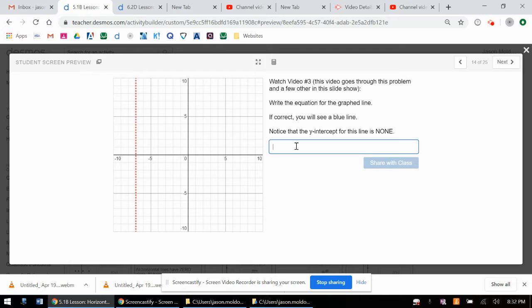And this one says we're going to write the equation for the graphed line. If correct, with these little graphs, you'll get some instant feedback that you did this correct. And it also reminds us, notice that the y-intercept for this line is none.